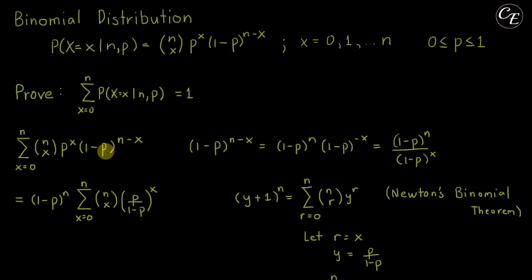Now for this term, 1 minus p raised to n minus x, we can factor it out into 1 minus p raised to n times 1 minus p raised to negative x, or 1 minus p raised to n over 1 minus p raised to x.